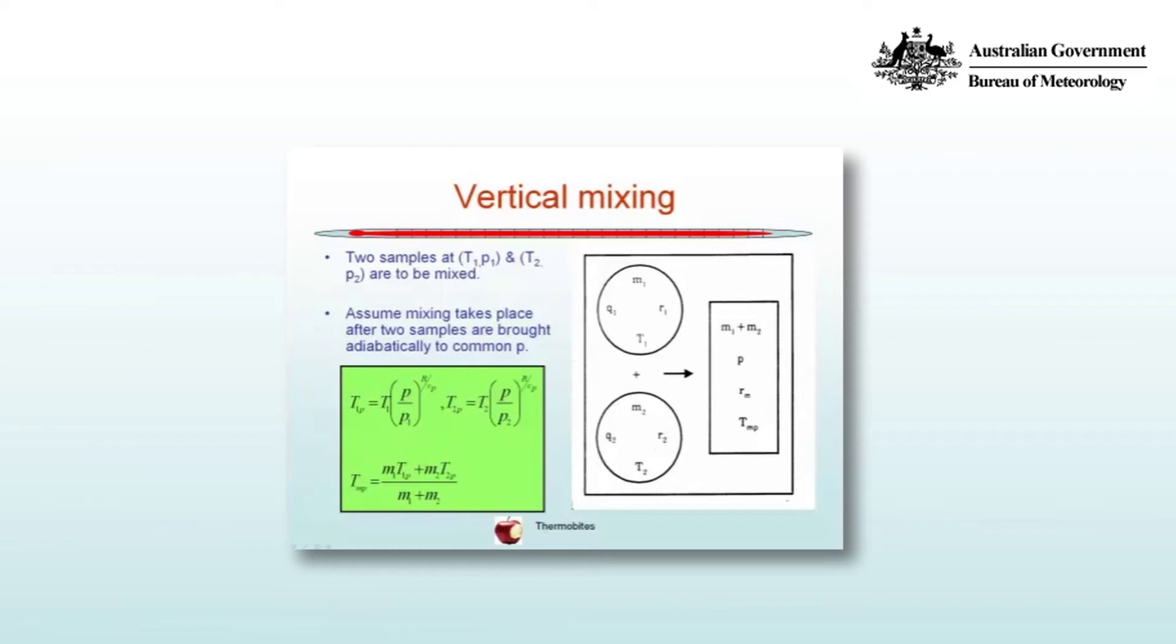So assume the mixing takes place after the two samples are brought adiabatically to a common pressure temperature. We can write then the temperature of the first air mass at this pressure and use Poisson's equation as shown, and then the second air mass is brought down to the same pressure and so it has a new temperature after that mixing.